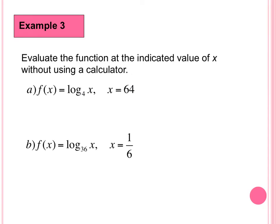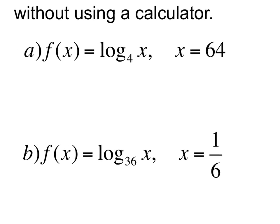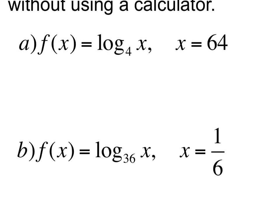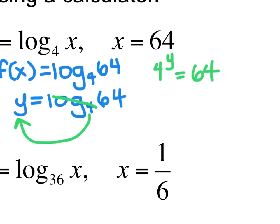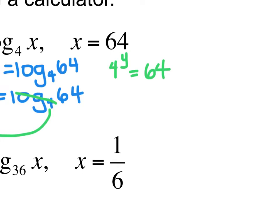Example 3 says evaluate the function at the indicated value of X without using a calculator — this would be on the no-calculator portion of a test. Part A says F of X equals log base 4 of X, and X is 64. So the first thing I'm going to do is plug in 64 for the X: F of X equals log base 4 of 64. As we get better with logs, we can do the mental math, but until we get there, we're going to rewrite this in exponential form. So I'm going to change F of X to Y: Y equals log base 4 of 64. Converting to exponential notation, 4 comes across, picks up the Y, drops off, leaving the 64.